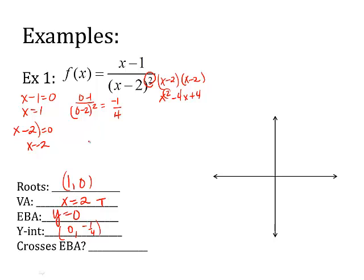Does it cross the end behavior asymptote? Let's see. If I set it all equal, let me do it up here. x minus 1 over (x minus 2) squared equals 0. Well, that's going to be 0, so x minus 1 equals 0, so x is 1. So it's going to cross, yes, it's going to cross where x is a 1 and the y is 0. So that's the same place at the root. It's going to cross at my root.